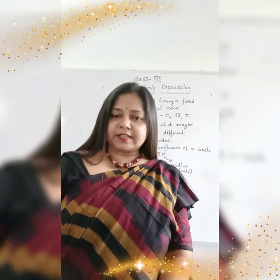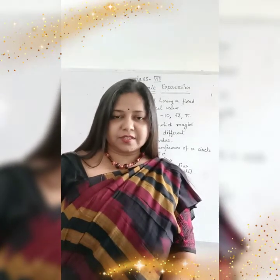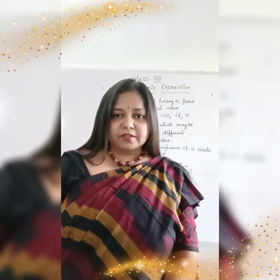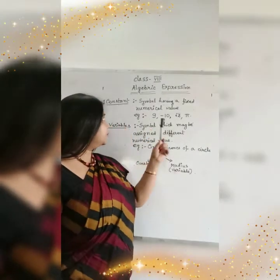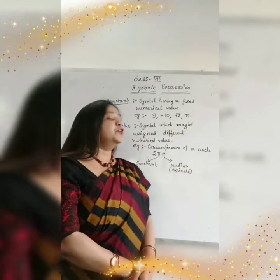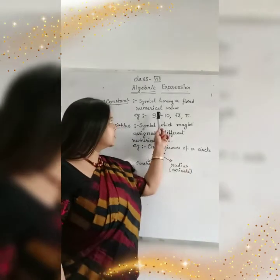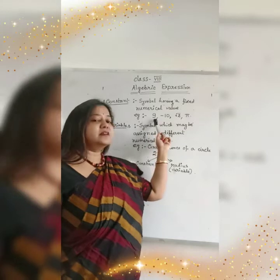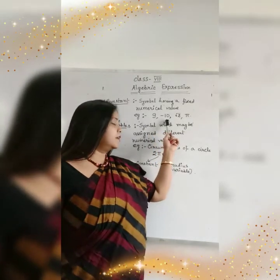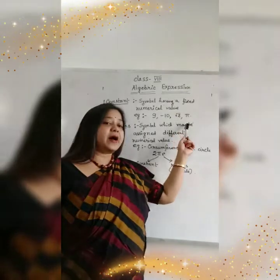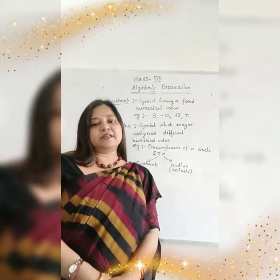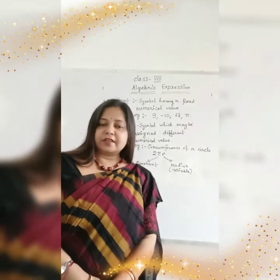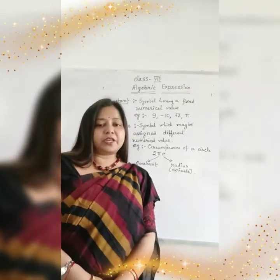But in this sentence I have used two unknown words. The first word is constant and the second word is variable. So let's see what is the meaning of constant. A symbol having a numerical value is called constant. So the examples are: suppose 9, suppose 10, suppose root 2, suppose 5. These are called fixed numerical values, and these are the constants in the expression.